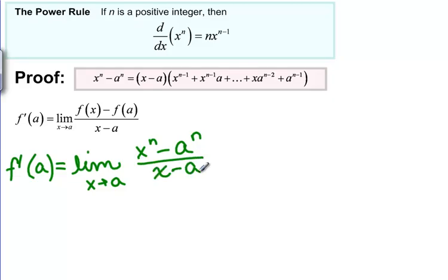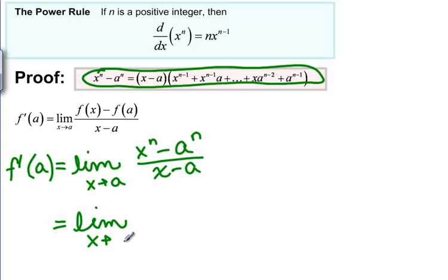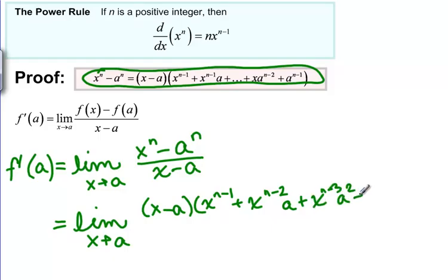Now we're going to use an algebra fact that X to the N minus A to the N can be factored. And we can factor it as X minus A times X to the N minus 1 plus X to the N minus 2 A plus X to the N minus 3 A squared plus dot, dot, dot.